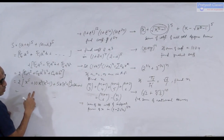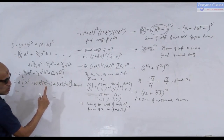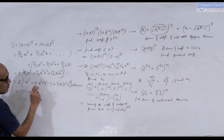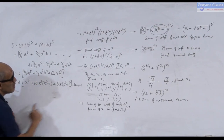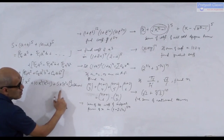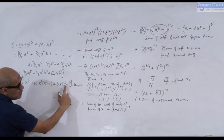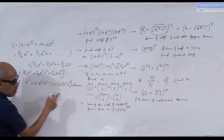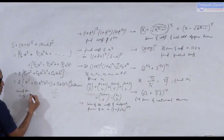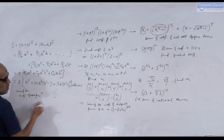Now we need to find the odd-power terms in x from this expression. For example, x⁶ is an even-power term and we are not interested in it. The odd powers are x⁵, and from expanding 10x³·(x³-1) we get terms like x⁶ (even) and -10x³ (odd). From the last part, expanding 5x·(x³-1)² gives odd terms too. We collect only the odd-power terms.